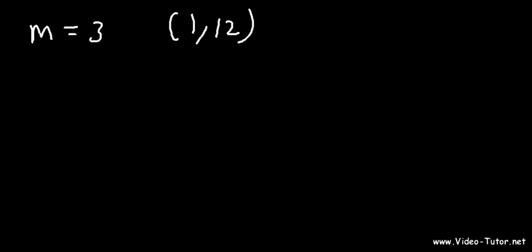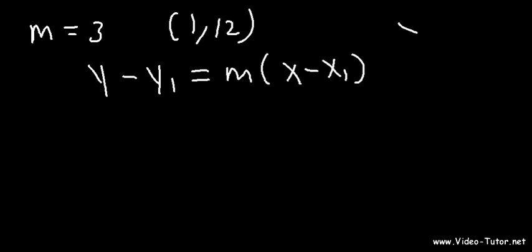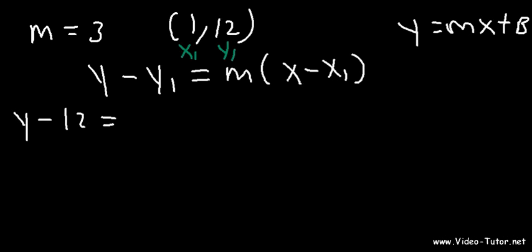So let me continue this on the next page. Now that we have the slope, which is 3, and the point 1 comma 12, we can now find the equation of the tangent line. We're going to use the point-slope form: y minus y1 is equal to m times x minus x1. So this is going to be y minus 12 is equal to 3 times x minus 1. That's the equation of the tangent line in point-slope form.